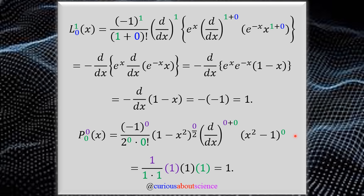For the associated Legendre polynomials, we have this combined form with a zero derivative — so that goes to one — a zero pre-polynomial giving one, and a zero post-polynomial giving one as well. All in all, we simplify down to one: the most simplified state this could possibly be in for a central potential given the Coulombic traction force.